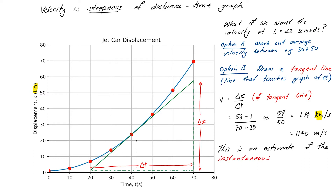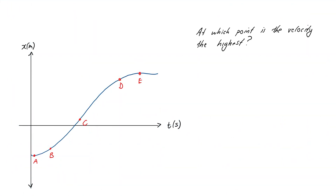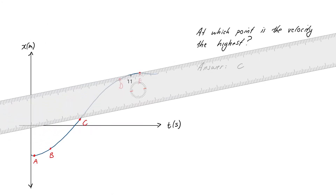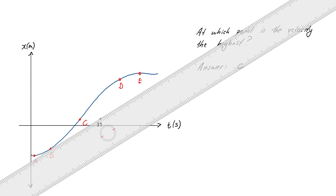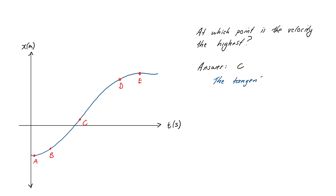With that idea in mind — that we can work out velocities by drawing a tangent line and taking its slope — look at the following graph and figure out at which labeled point the velocity is highest in magnitude. Pause the video and figure out an answer before continuing. The graph is steepest at point C, so the correct answer is C. That's where the velocity is greatest in magnitude.